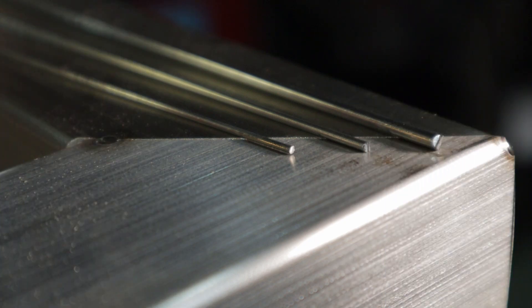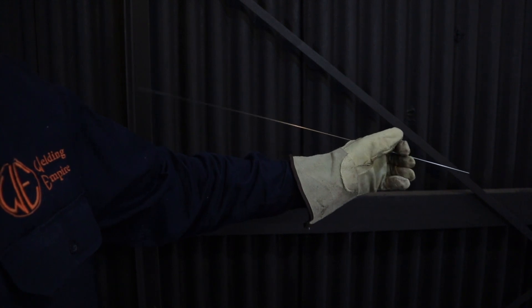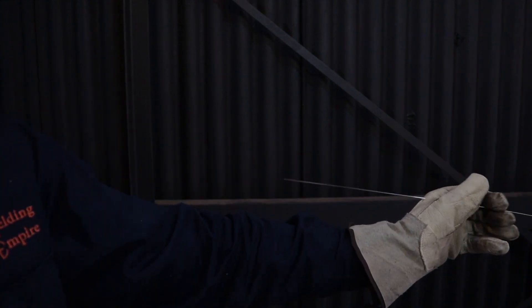Here are the most common wire sizes 0.045, 1/16 and 3/32 or 1.2, 1.6 and 2.4 millimeters.